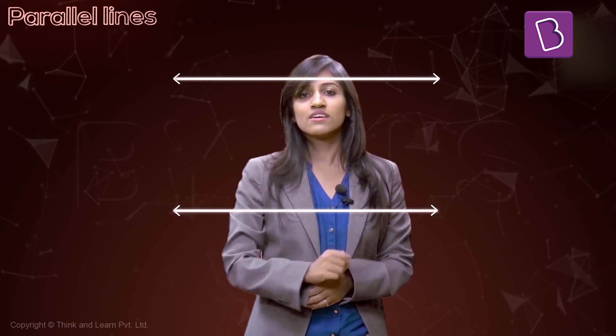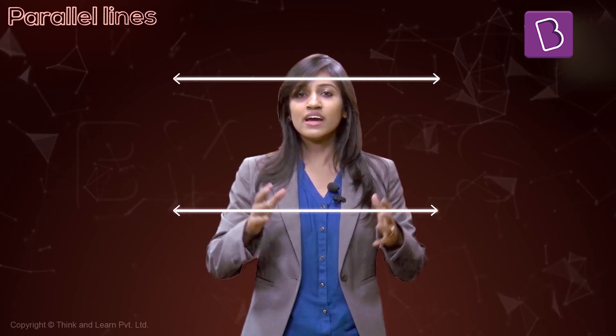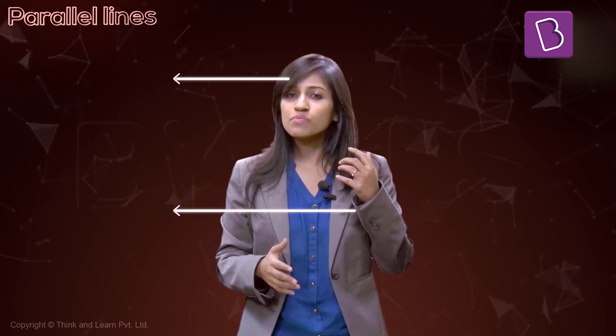Sometimes lines decide to cross each other; sometimes they decide not to cross at all. When they decide not to meet, they get themselves a special name — parallel lines. Parallel lines are lines that go like this; they decide not to meet at all.